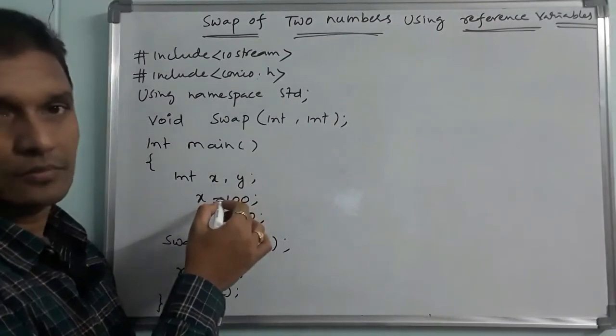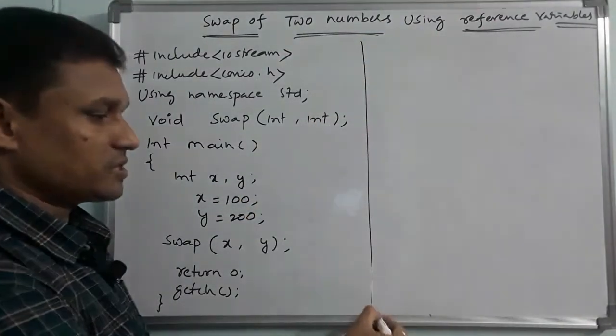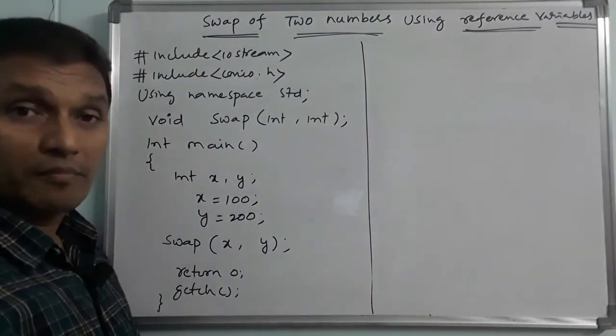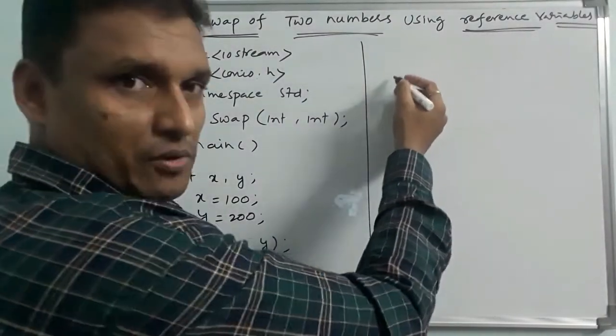So, variables. In this program we have a type of variables — we have normal variables.